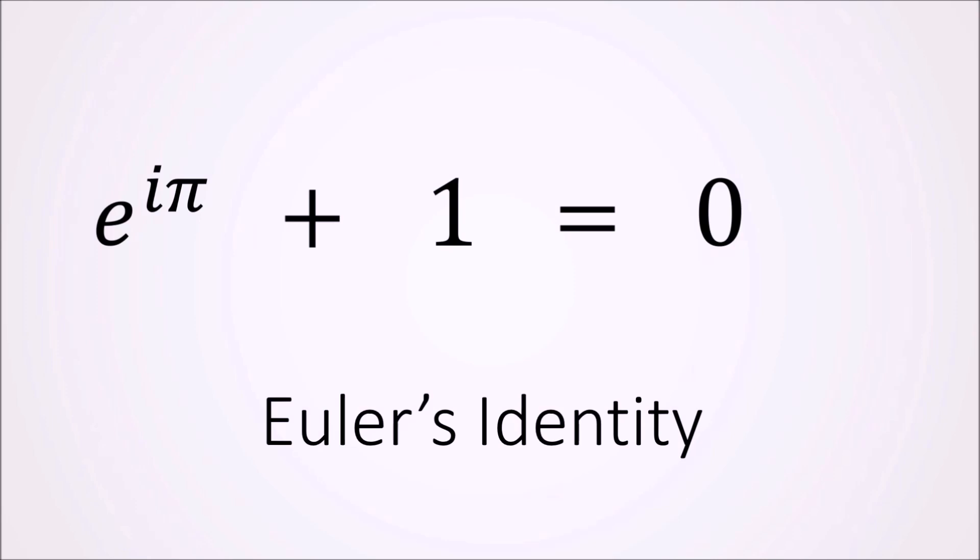Now we have an expression that contains 0, 1 and i as well as E and pi. And on top of that, it contains an addition, a multiplication, and an exponentiation. It's called Euler's identity.